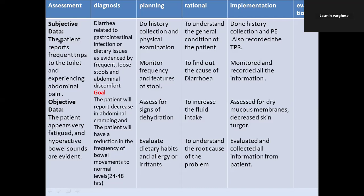The second planning item is to monitor the frequency and features of the stools. This is very important — if there is any bloody stool, you must inform the lab, pathology department, or doctor about any abnormal or unusual characteristics. The rationale is to find out the cause of diarrhea. In implementation, write that you monitored and recorded all the information.